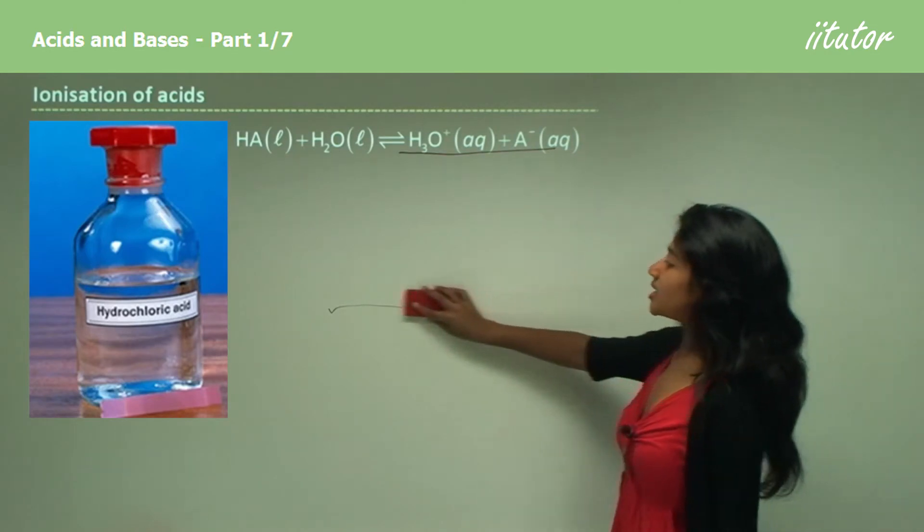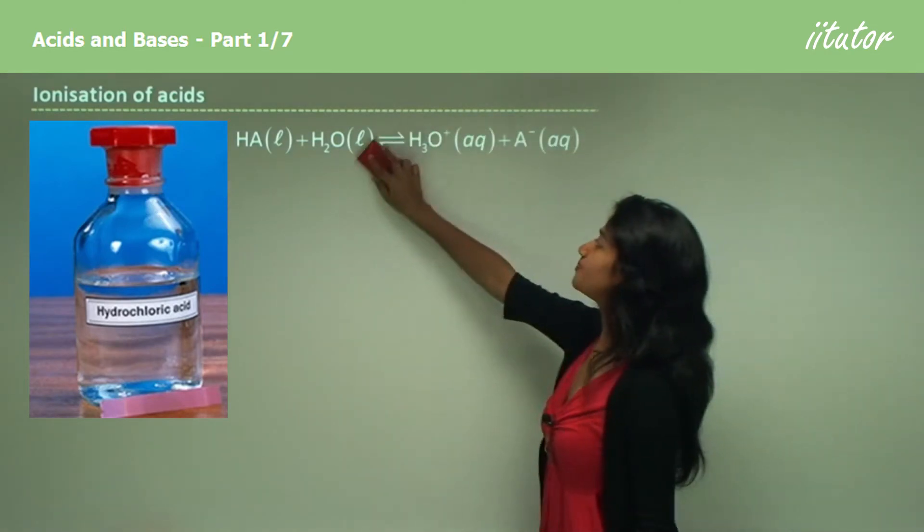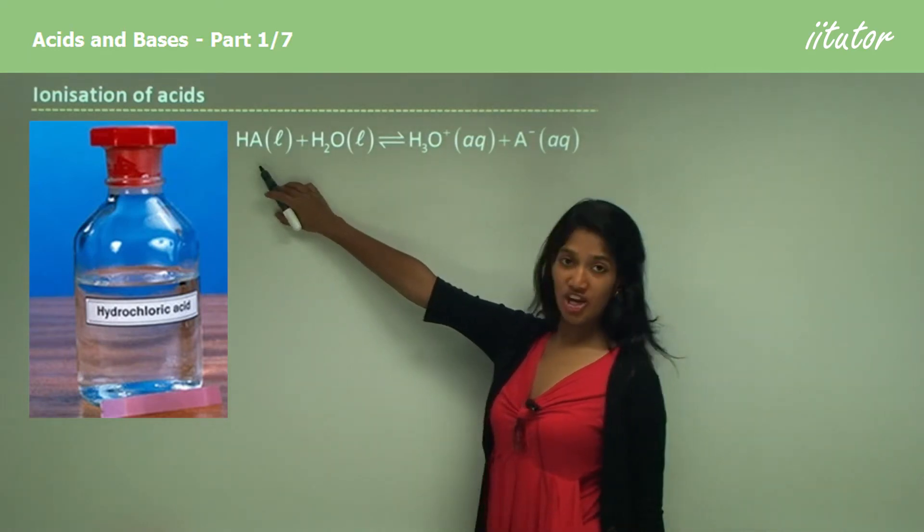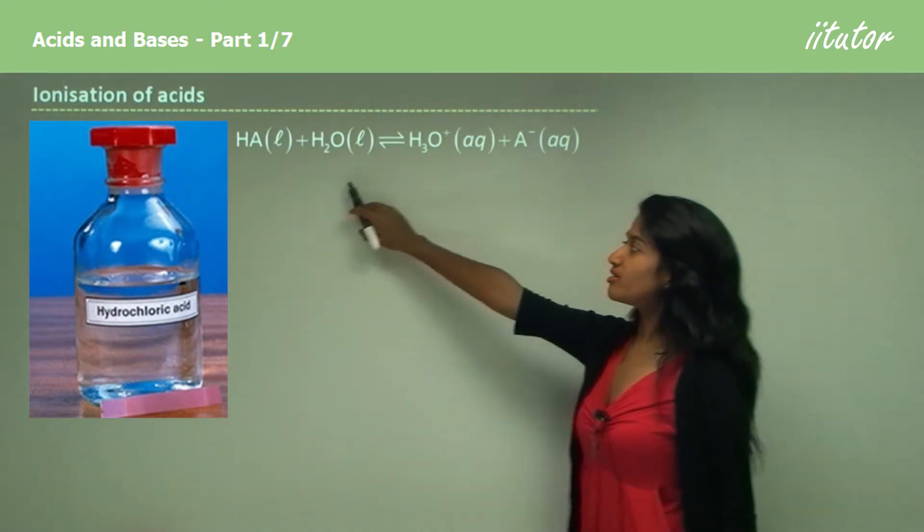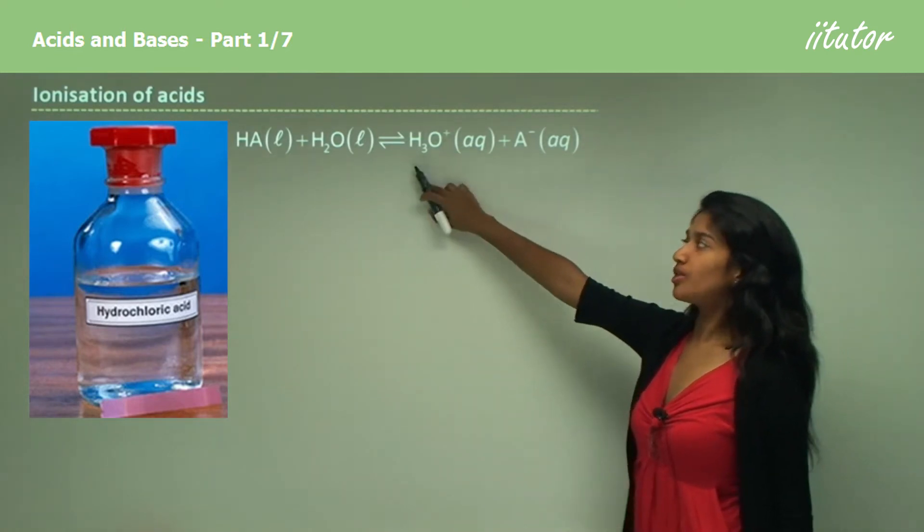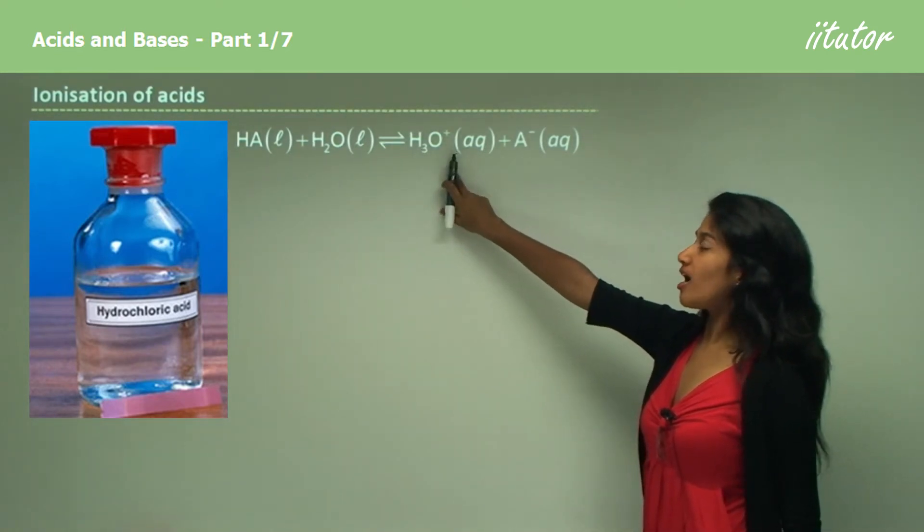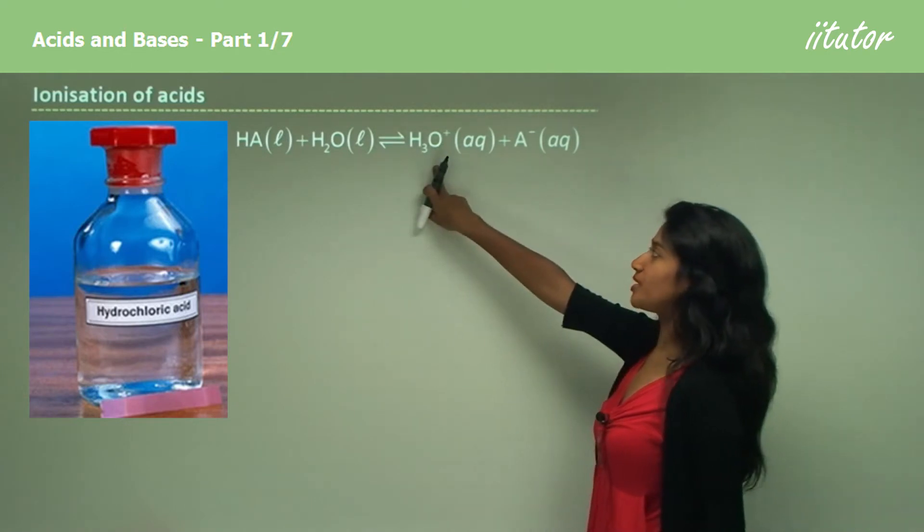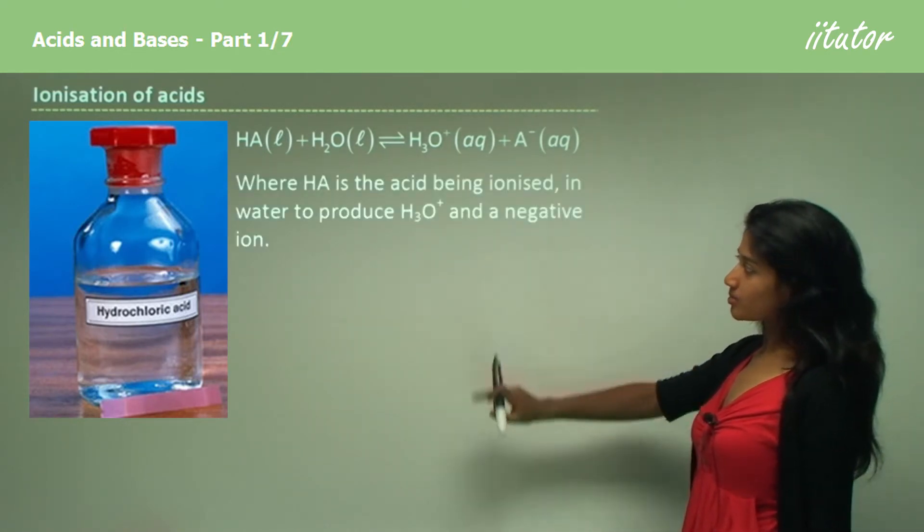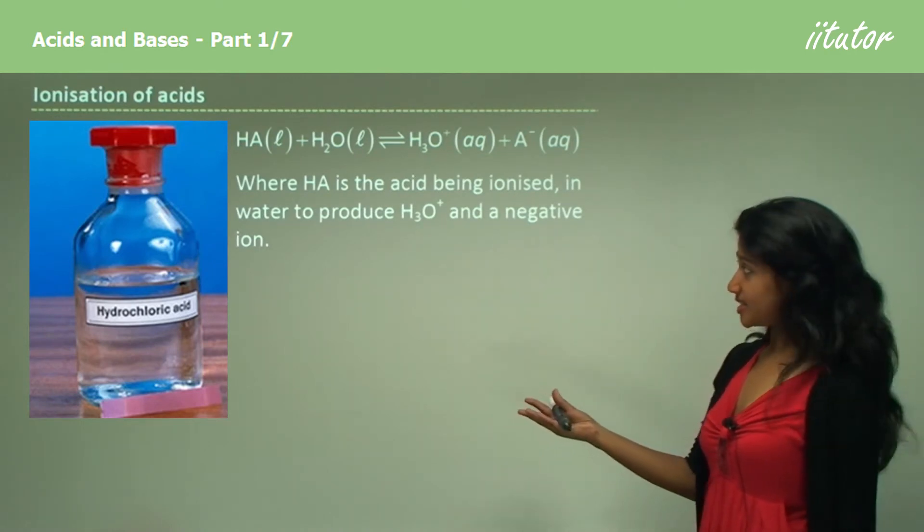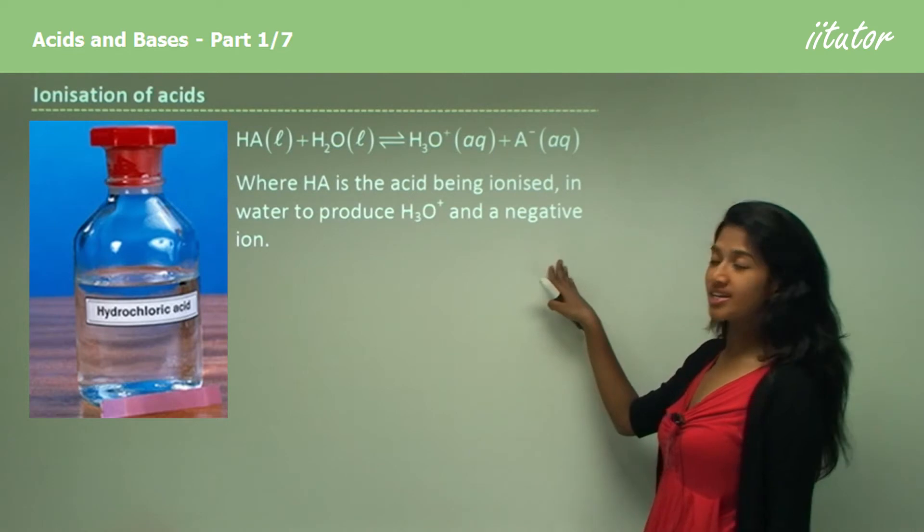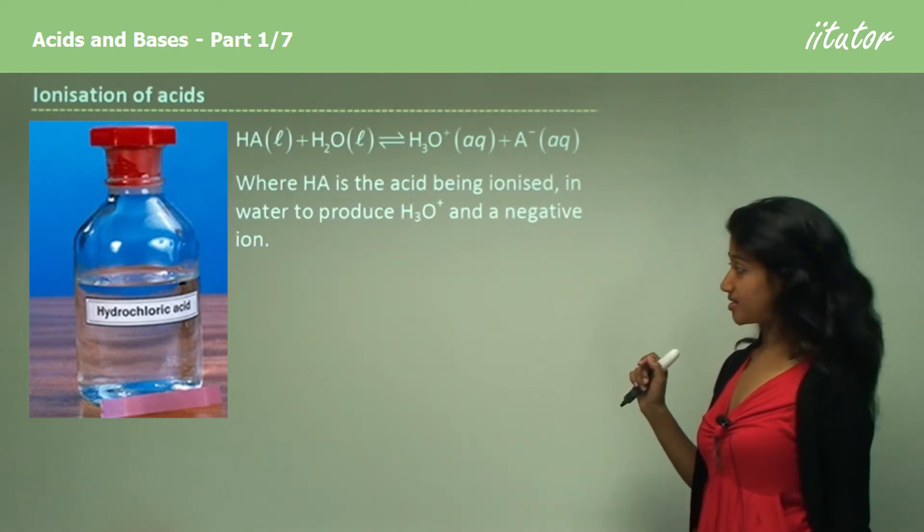Now we're looking at ionization of acids. We'll take a sample example here: HA. HA reacts with water. This reaction leads to the ionization of HA, which produces a hydronium ion and A-. Where HA is the acid being ionized, it produces a hydronium ion and a negative ion, which is A- in this case.